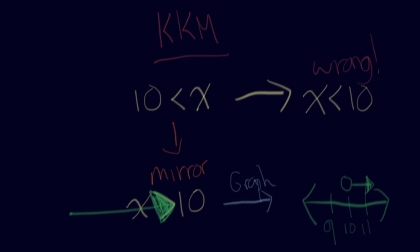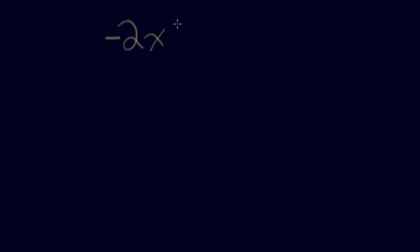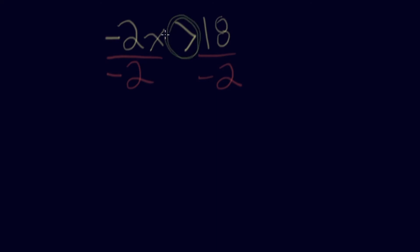There are special rules. The only one is: if you multiply or divide by a negative number at any point, you have to flip the inequality sign. So if I wanted to solve negative 2X is greater than 18, I divide both sides by negative 2, and the sign flips — X is now less than negative 9.